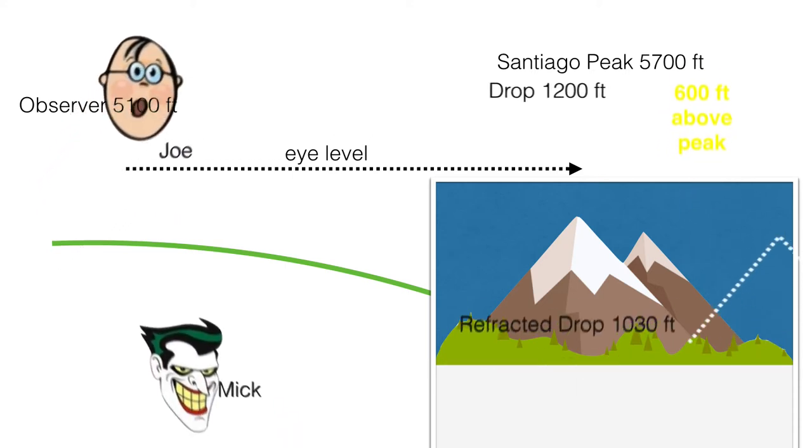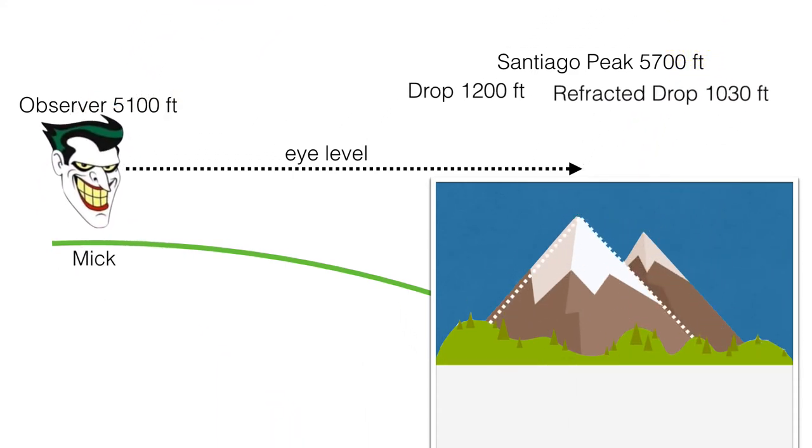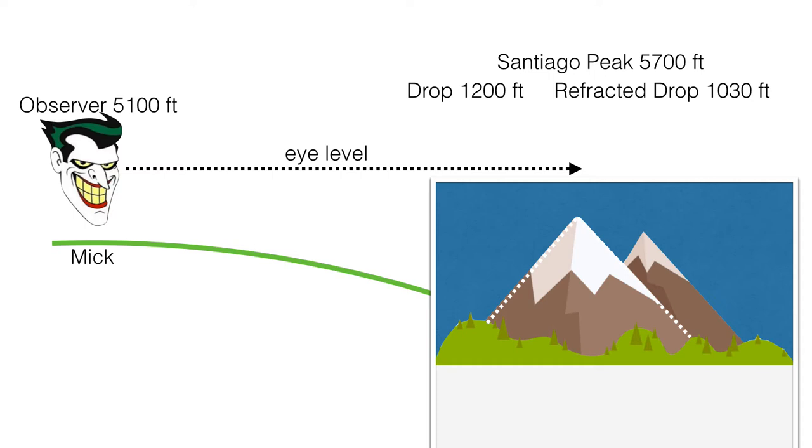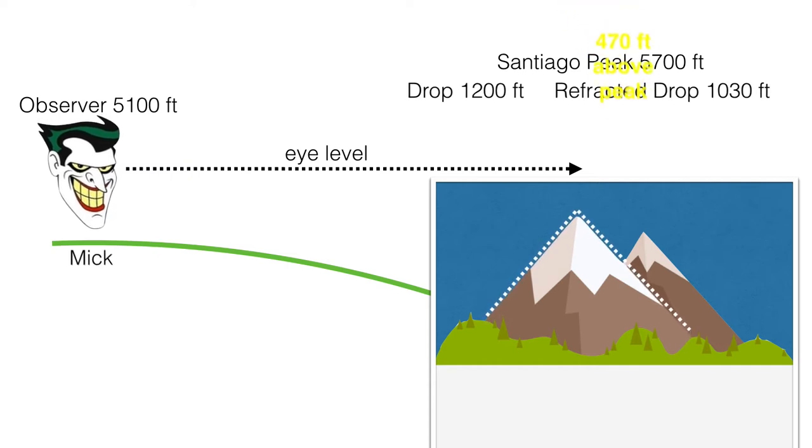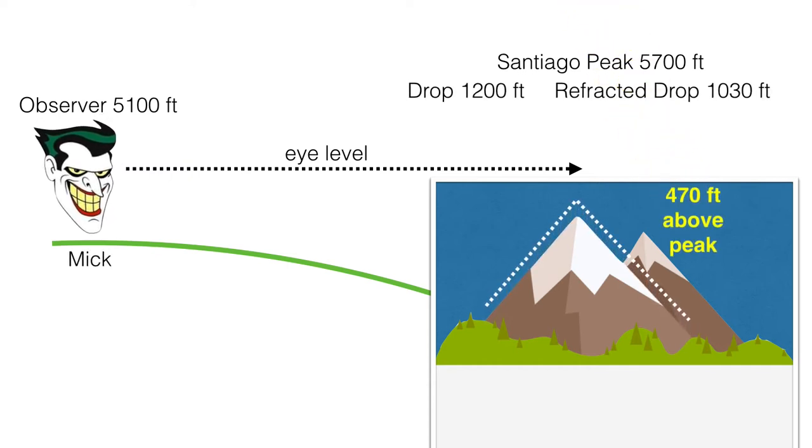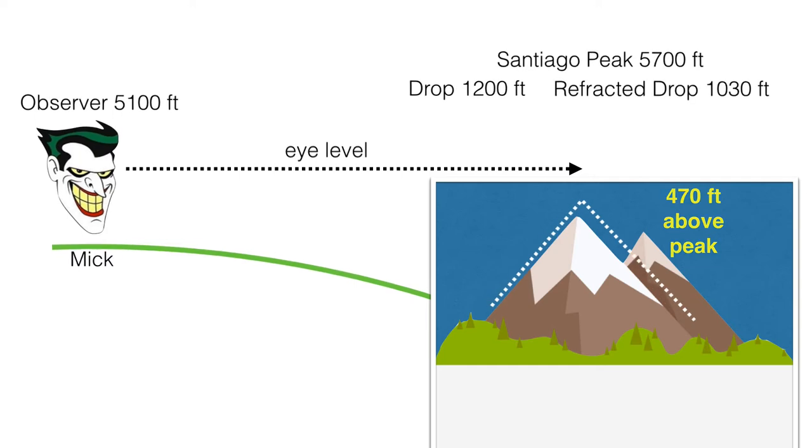And now let's bring in Mick. So Mick says, yeah, the Earth is a globe, but there is something called standard refraction, or just atmospheric refraction. So he is estimating that because of refraction, refraction bends light downwards, which means that distant objects appear slightly higher than they actually are. So he says that the mountain should appear slightly higher, which means the eye level should be only 470 feet above the mountain peak.